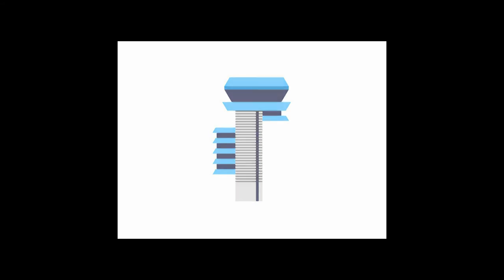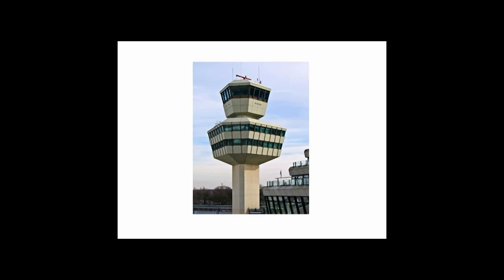Here we have a control tower in Berlin, Germany. At the very top is what we call the tower cab — that is where the airdrome control service is provided from. Below that can be a number of things: most jurisdictions will house the approach control units, office space, rest areas, recreation — it will vary based on the needs of that unit.